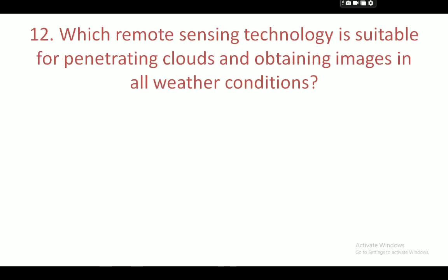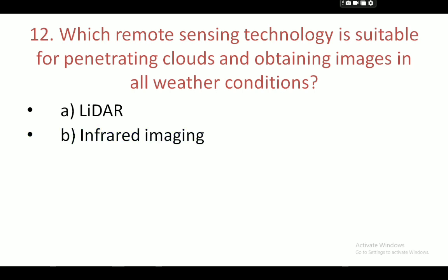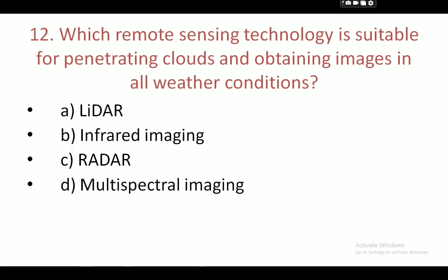Next question: which remote sensing technology is suitable for penetrating clouds and obtaining images in all weather conditions? Your options are: LiDAR, infrared imaging, radar, and multispectral imaging. The correct answer is C — radar.